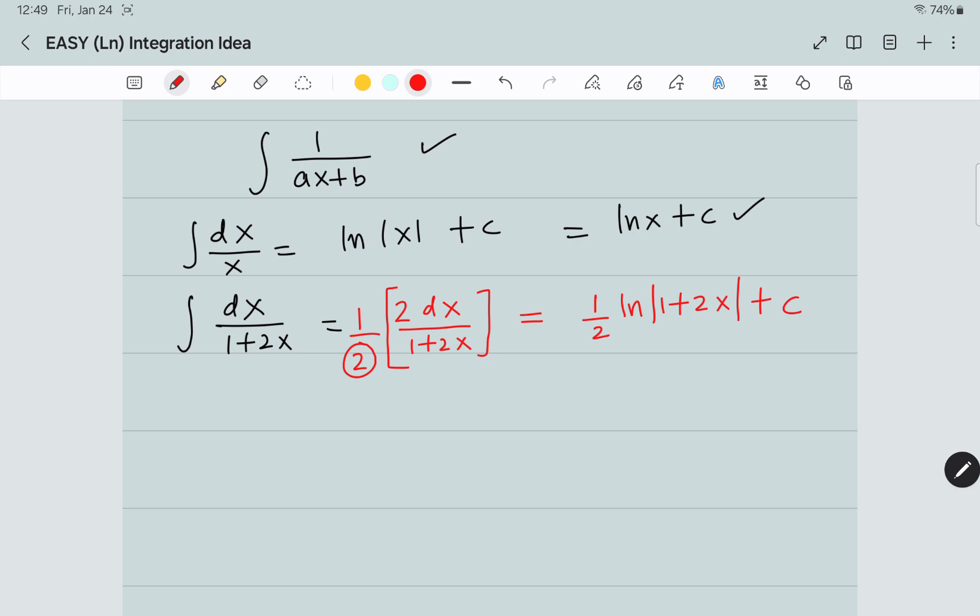Let me give you another example. Integral dx divided by 1 minus 2x. The derivative of 1 is 0 and the derivative of minus 2x is minus 2. We need to get this minus 2 in the numerator.